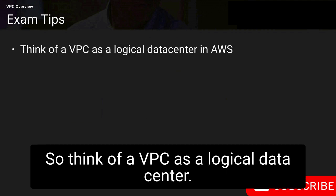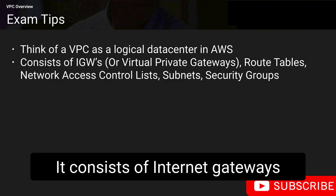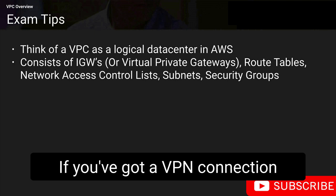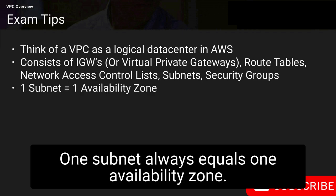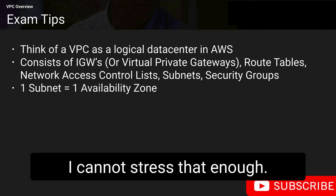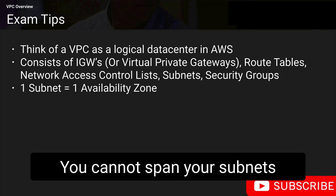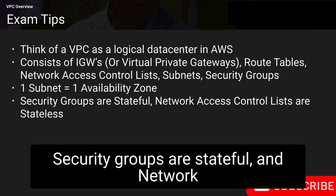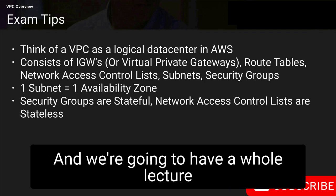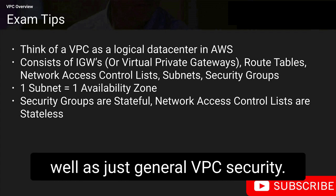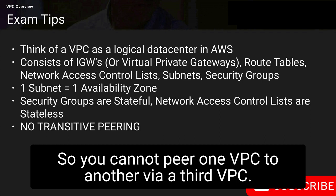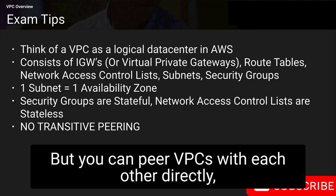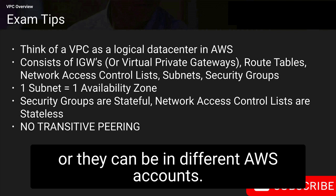Let's look at exam tips. Think of a VPC as a logical data center in AWS. It consists of internet gateways or virtual private gateways (for VPN connections), route tables, network access control lists, subnets, and security groups. One subnet always equals one availability zone — you cannot span subnets across multiple availability zones. Security groups are stateful; network access control lists are stateless. And you cannot do transitive peering — you cannot peer one VPC to another via a third VPC, but you can peer VPCs directly across the same or different AWS accounts.